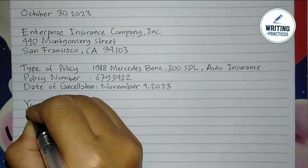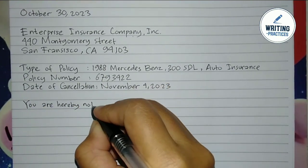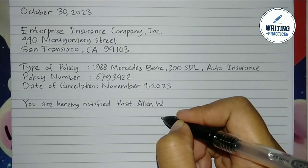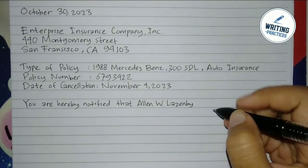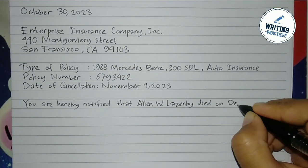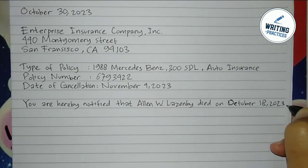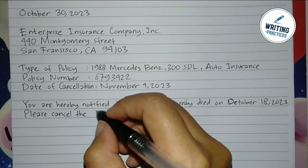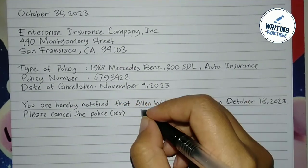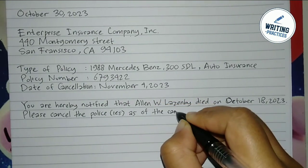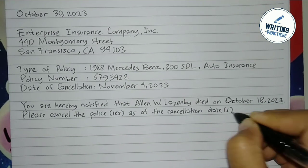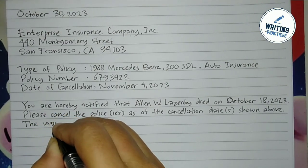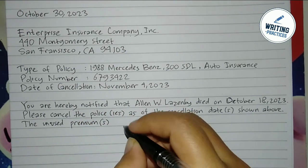In the first paragraph, write clearly that you want to inform the recipient that the person has died. Write the full name of the person and the date of death by mentioning the month, date, and year. You can also write your relationship to the person, but it is optional since the insurance company already has the data. Then request the recipient to cancel the policies of the insurance and mention the cancellation date that you have written above.